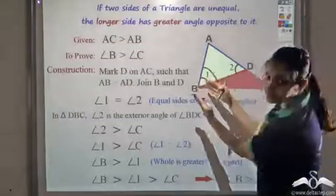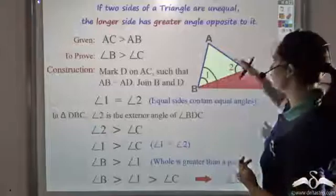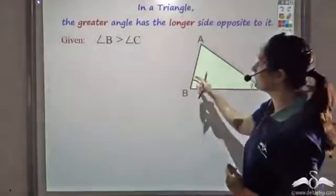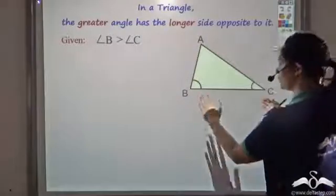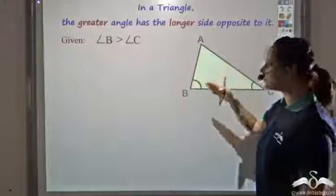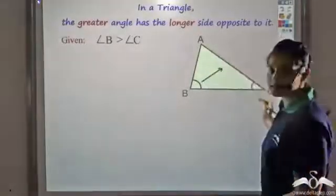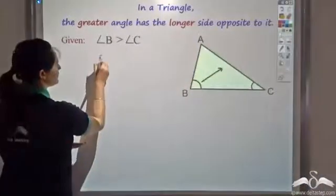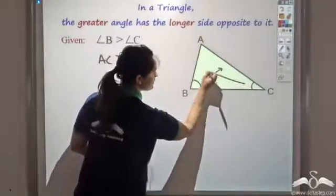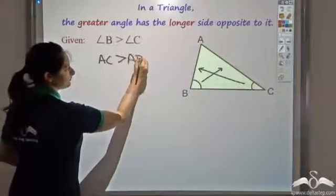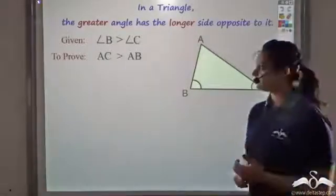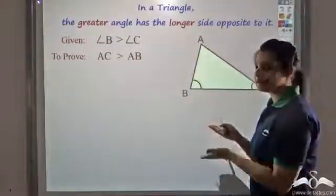Not just this — if you have a greater angle, the side opposite to it is also greater. So in a triangle, the greater angle has the longer side opposite to it. Let's say angle B is greater than angle C. I want to prove that AC — side opposite to B — is greater than AB — side opposite to C. There are three possibilities: AC is greater than AB, AC equals AB, or AC is less than AB.